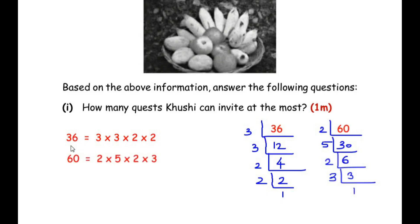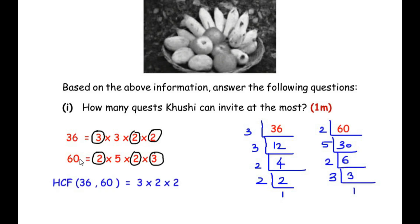To find the HCF of 36 and 60, we circle the common terms between the two factorizations. 3 is common to both, as are two 2s. The HCF is 3 times 2 times 2. So HCF of 36 and 60 equals 3 × 2 × 2 = 12. Khushi can invite at most 12 guests to her birthday party.